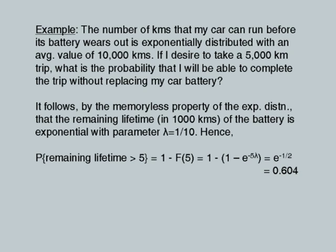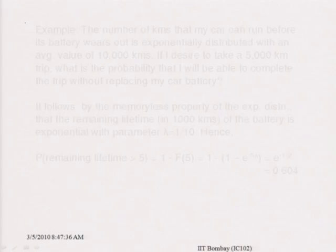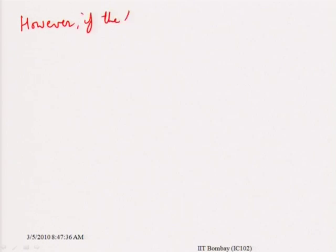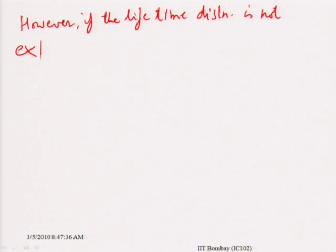So the probability of completing the trip is approximately 0.6. This could be worked out easily without the knowledge of how long the battery had been in use, because the battery life was declared as following an exponential distribution. Now, what happens if the lifetime distribution is not exponential?